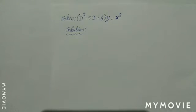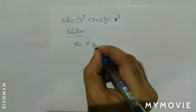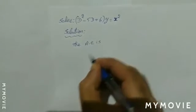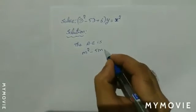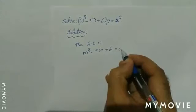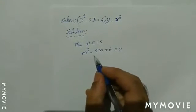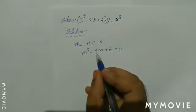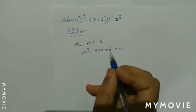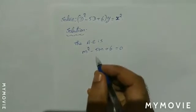First, to find the complementary function, we need the auxiliary equation. The auxiliary equation is m squared minus 5m plus 6 equal to 0. To solve this auxiliary equation, we have to find two numbers such that if we add them we get minus 5, and if we multiply them we get 6. The two numbers are minus 2 and minus 3.